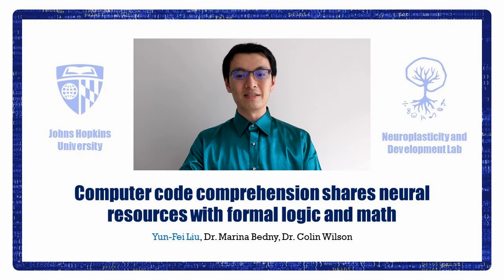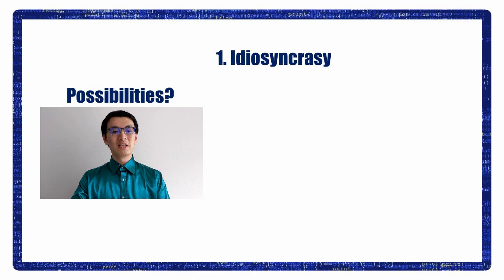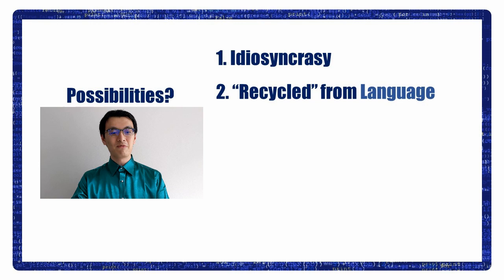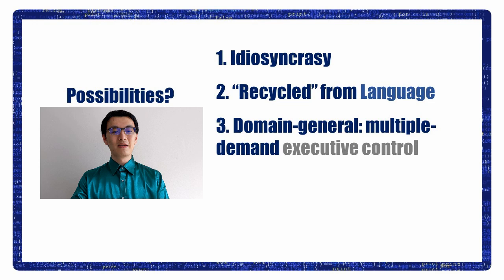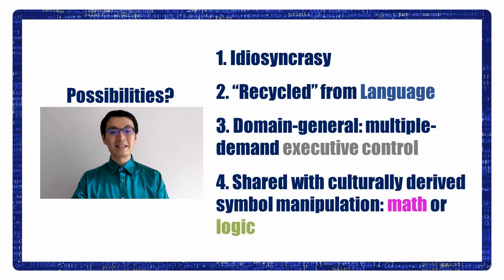Here are several possibilities. First of all, idiosyncrasy. Perhaps each programmer uses a different neural structure to understand codes. Second, neuronal recycling. Code comprehension could latch onto some existing network evolved for other purposes such as language. Another possibility is that code comprehension is a cognitively demanding task that relies on the domain general executive control system. Lastly, code comprehension could share neural resources with other culturally derived symbol manipulation systems such as symbolic math or formal logic.